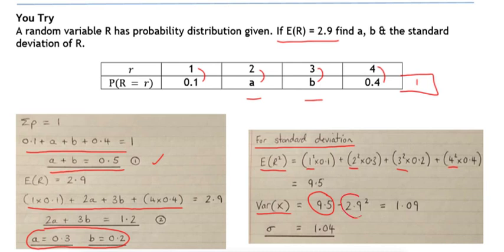So that gives us 1.09. And just remember in these questions to always check whether you've been asked to find the variance or the standard deviation. In this case, it was the standard deviation, so we must remember to square root our variance at the end to get our standard deviation, and the answer to 3 significant figures is 1.04.